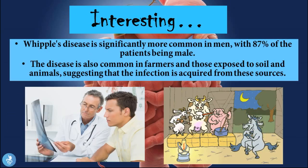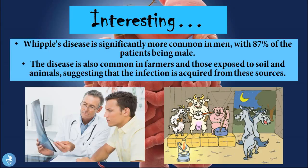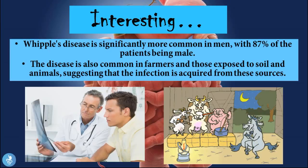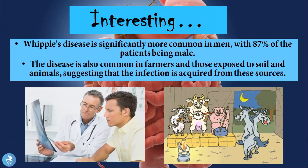Something very interesting about Whipple's disease is that it is significantly more common in men, with 87 percent of patients being male. The disease is also more common in farmers and those who are exposed to soil and animals, suggesting that the infection is acquired from these sources.